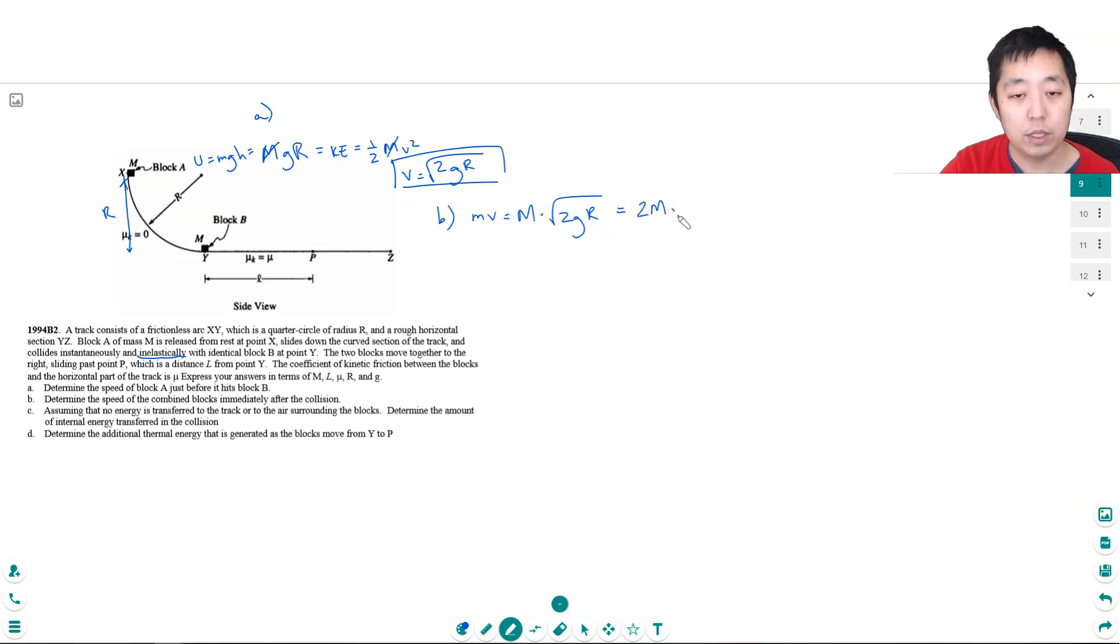Now this momentum has to equal its momentum after it collides. When they collide they're stuck together so I have two m times the v after. So the m's cancel again so v is equal to square root of two gr divided by two. Okay so that's its velocity once they've collided together, just conservation of momentum, momentum before momentum after.